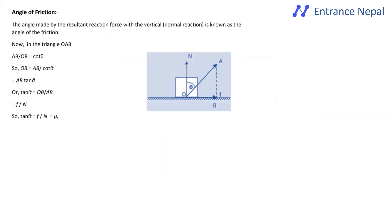The angle of friction is defined as the angle between the normal reaction and the resultant of the normal reaction and frictional force. When the normal reaction R and frictional force are at 90°, the resultant makes the angle of friction with R.